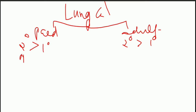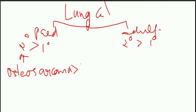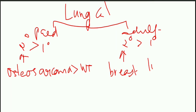We should know what is the most common reason for this metastasis or these secondary tumours. In children, most commonly it is from the bone — that is osteosarcoma — which is more common than Wilms tumour. Whereas in the adult population, in the case of females it is breast cancer, and in the case of males it is metastasis from the other lung.